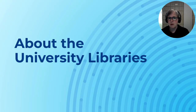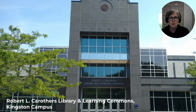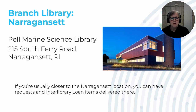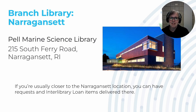First, a little about the university libraries. The Robert L. Carruthers Library and Learning Commons is URI's main library, located in the center of the main URI campus in Kingston. URI also has one branch library, which might be more convenient depending on where you live — that's the Pell and Marine Science Library at the Narragansett Bay campus.